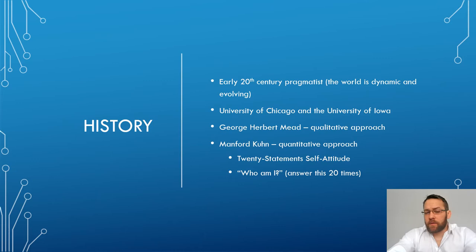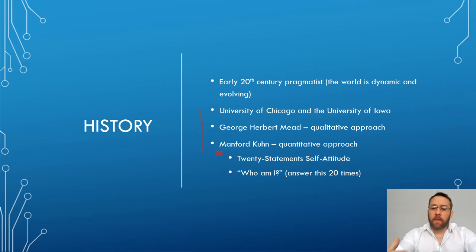This started to develop in the early 20th century, with important individuals from the University of Chicago and University of Iowa. The big thing is we're talking about Kuhn, who used both a quantitative and qualitative approach to look at how people describe themselves.